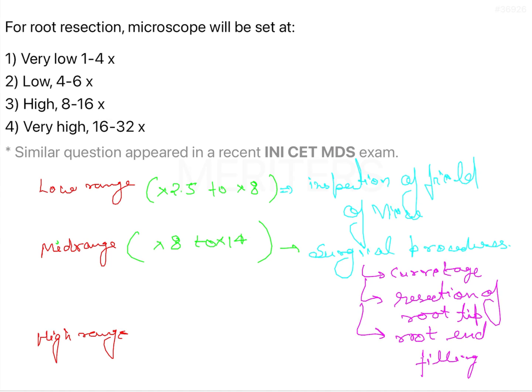High range magnification goes from 14x up to 30x or 40x. This is used for observing finer details — when you want to see very fine details, you use very high magnification. It is also used for documentation purposes.